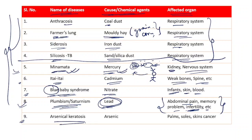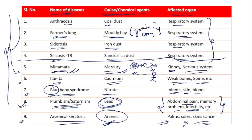Number eight: Plumbism or Saturnism is caused because of lead. It affects organs causing abdominal pain, memory problems, and infertility — especially infertility in women — due to lead poisoning. Number nine: Arsenical Keratosis is caused because of arsenic and it attacks the palms and soles, or leads to skin cancer. Because of arsenic poisoning, it attacks the portions being touched and can lead to skin cancer.